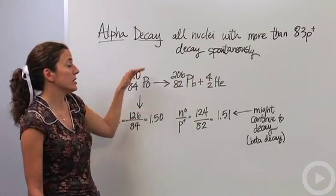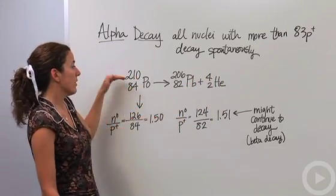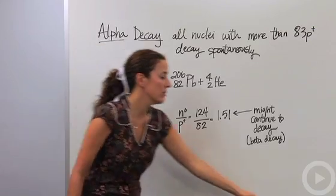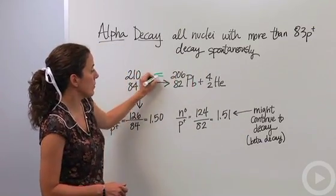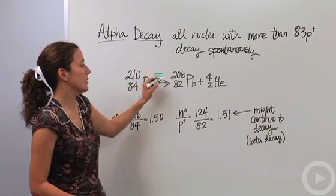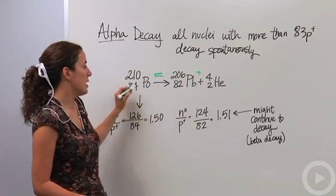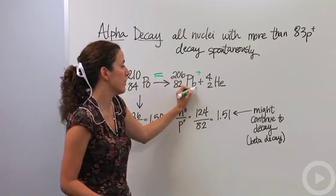Notice also when you're dealing with nuclear reactions that the mass numbers have to equal. If we're going to say this arrow as an equals, 210 equals 206 plus 4, and 84 equals 82 plus 2.